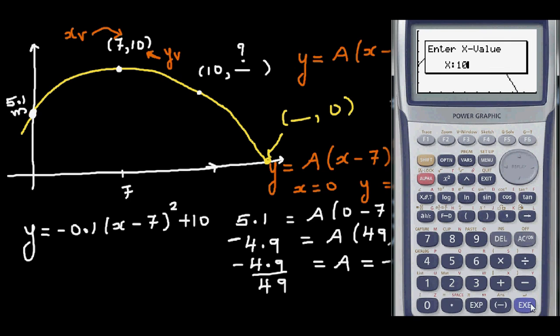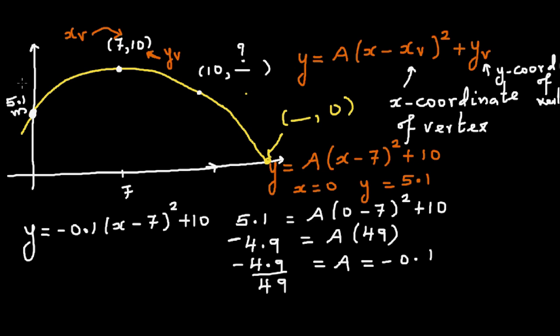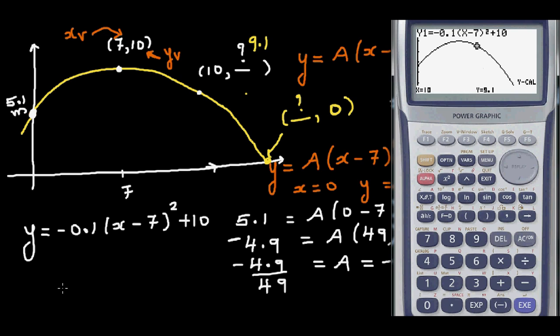So you can see this answer, this is 9.1. And this is when height is 0. When y is 0, what is x is what we want to find. So again, x calc when y is 0, so that is 17. After 17 seconds the ball fell down.